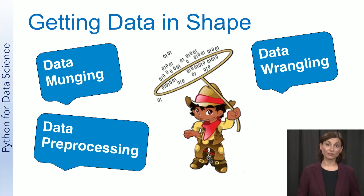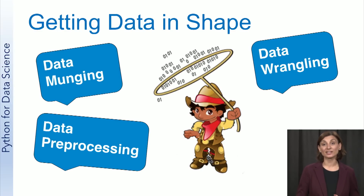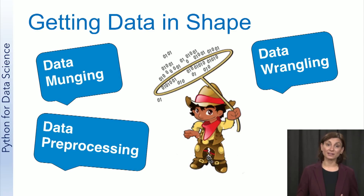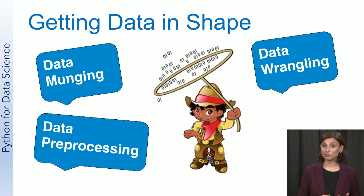The second part of preparing data is to manipulate the clean data into a format needed for analysis. This step is known by many names: data manipulation, data preprocessing, data wrangling, and probably my favorite, data munging.